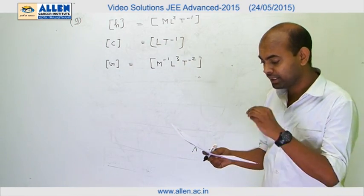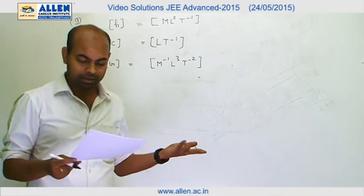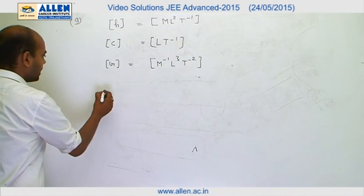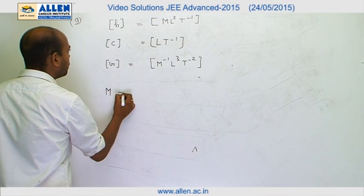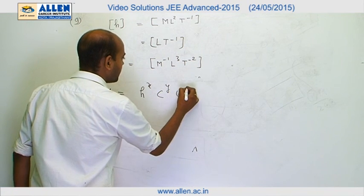They have asked us what is the dependence of these three quantities on M, L. So we can solve this by writing down M equals H to the power X, C to the power Y and G to the power Z.